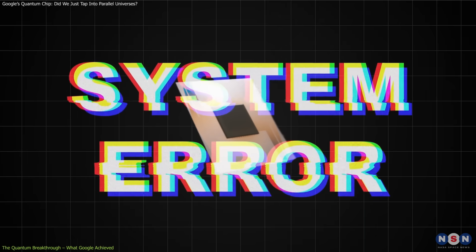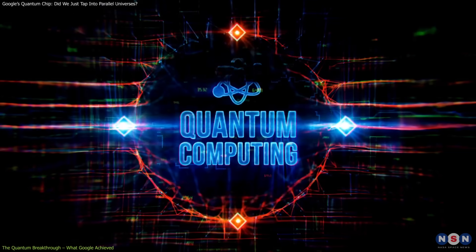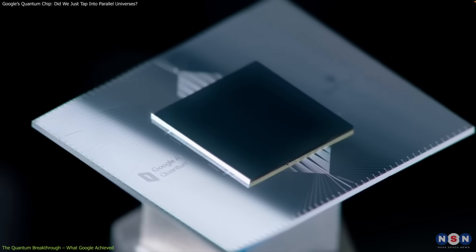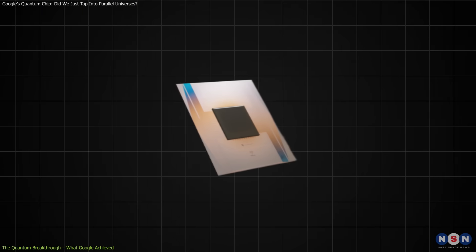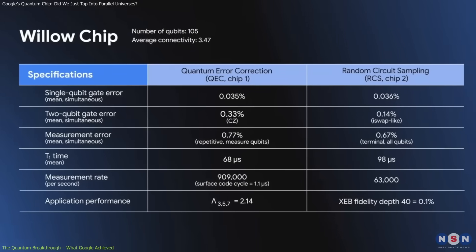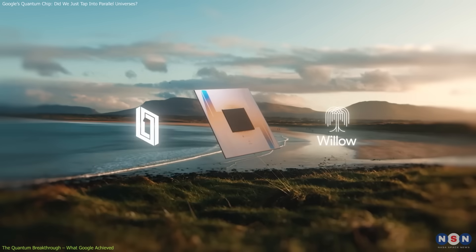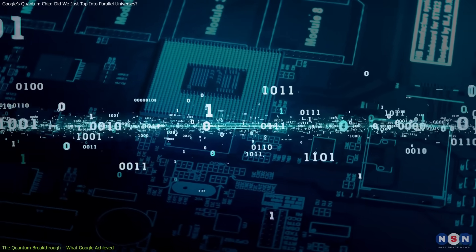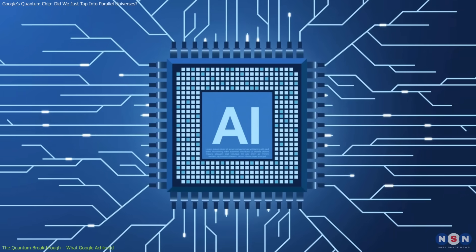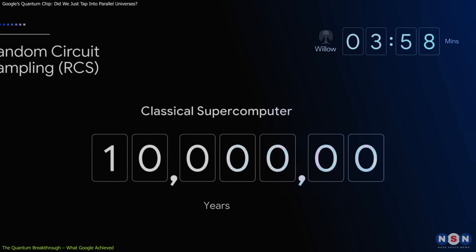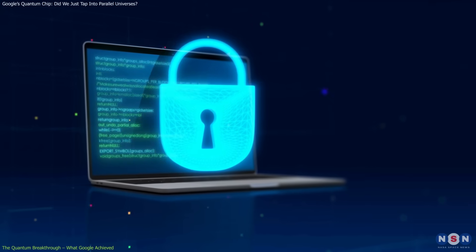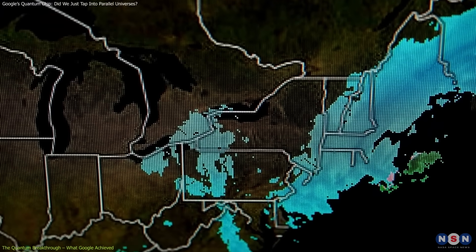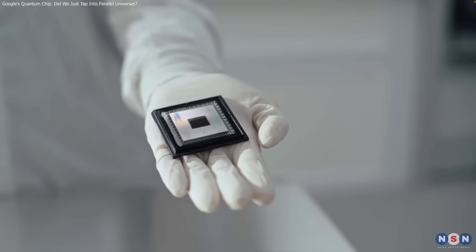Willow incorporates cutting-edge error correction techniques to address one of quantum computing's biggest challenges: fragility. Quantum systems are incredibly sensitive. Tiny environmental changes can cause errors. Google's advancements in stabilizing Willow mean that quantum systems are becoming more reliable. And that's a critical step toward practical quantum computing. What does this all mean for the future? Well, right now, Willow's task was purely theoretical. But this kind of power could revolutionize fields like cryptography, drug discovery, and even climate modeling. It's a milestone. A glimpse of the possibilities that lie ahead.